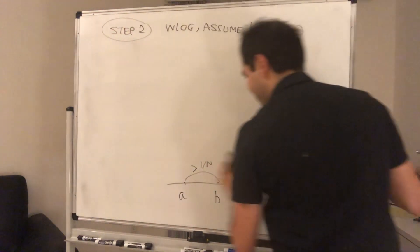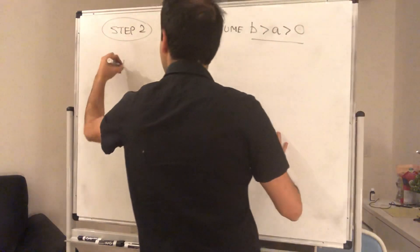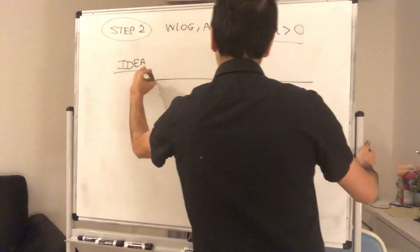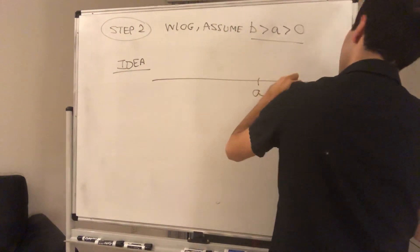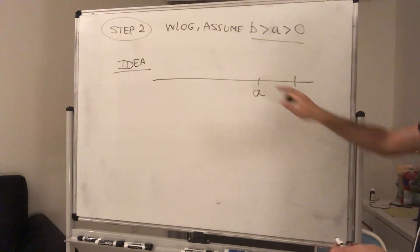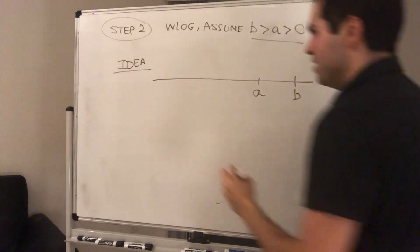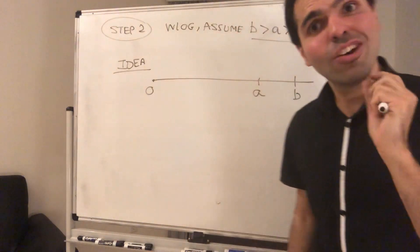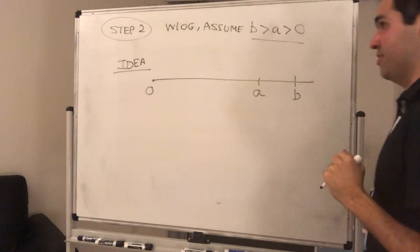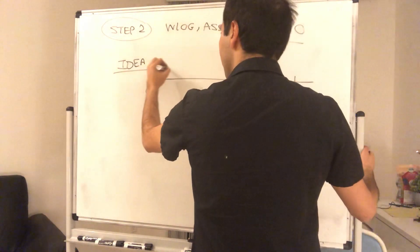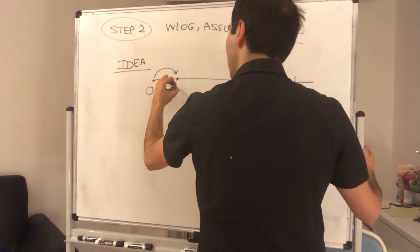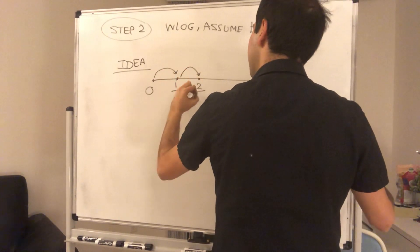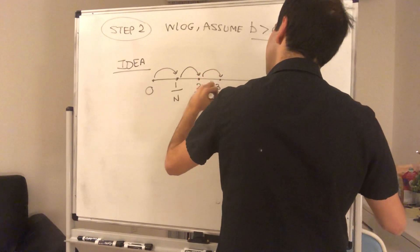Consider the following. What's the idea? The idea is as follows. Again, you have a and b. And if you want to find a rational number between them, start with 0. And remember, n is fixed. So think of n as 3 or something. Then start with 0 and successively add up something over n. So 1 over n, 2 over n, 3 over n, etc.